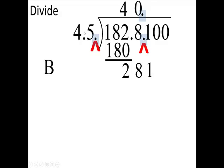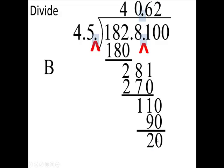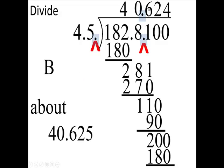Bring down the 1. And this is going to go 6 times. 6 times 45 is 270. Subtract, bring down a 0. You're going to go 2 times. 2 times 45 is 90. Subtract, 20. 4 times 45 is 180. We're going to say this is about $40 an hour. So, my answer is going to be B, I think. It's about $40 an hour.